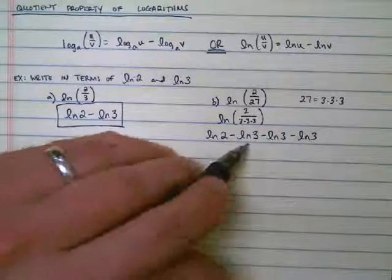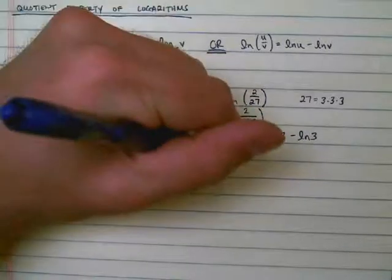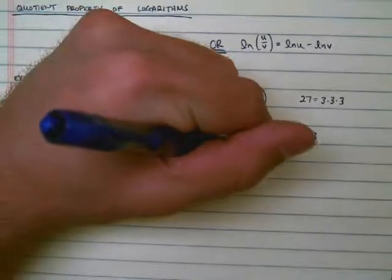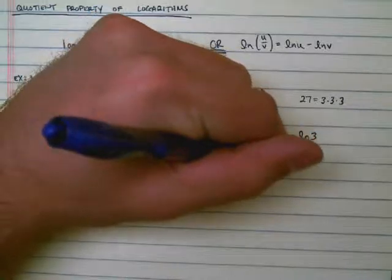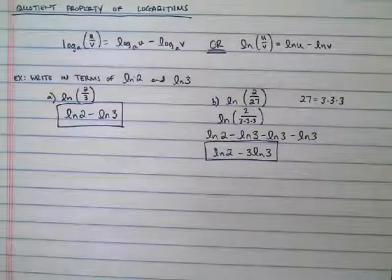Then I can combine these. I see I have 3 of them. So I really have ln 2 minus 3 ln 3. And that would be the simplest way to answer it.